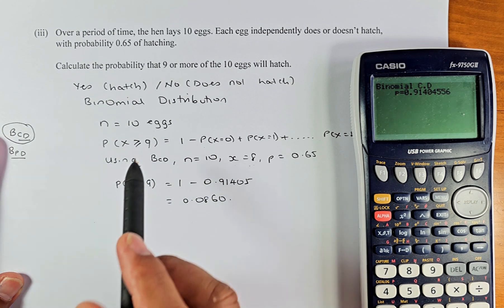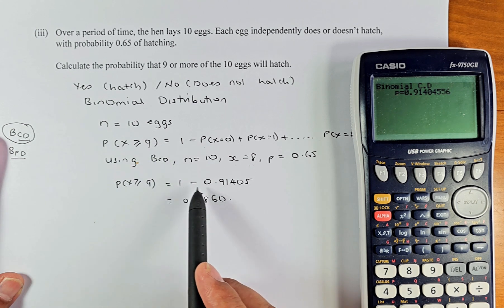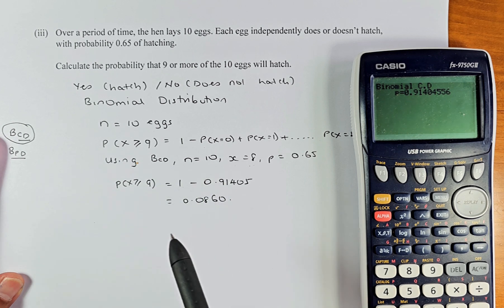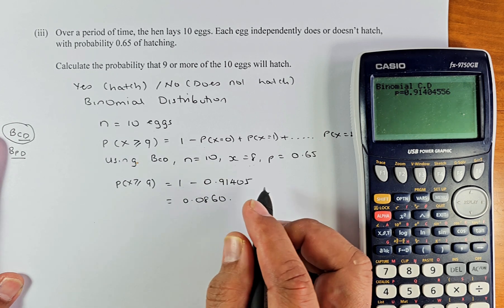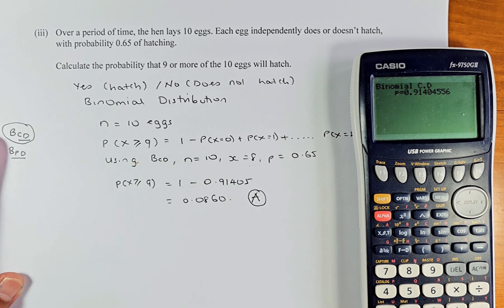Because we are interested in more than 9, 9 or more, you take 1 minus 0 to 8 and that's the answer. So 1 minus 0.91405 and the answer is about 0.0860, and that is the simple achieve for the binomial distribution.